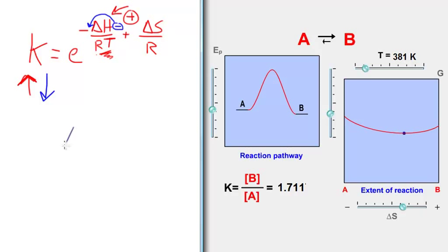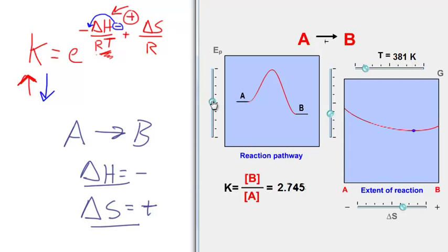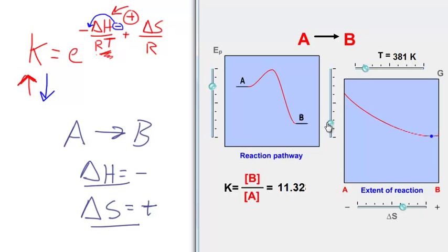Let's start off with a situation where A goes to B is exothermic and has a positive increase in entropy. We know this is a situation where the reaction is energetically favored and entropically favored, meaning the reaction will always be favored regardless of T. So I'm going to make the potential energy of the reactants higher than the products and make the delta S positive.